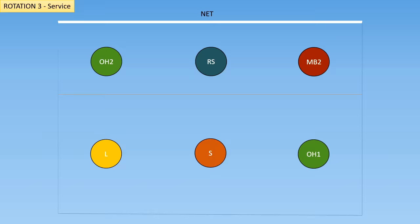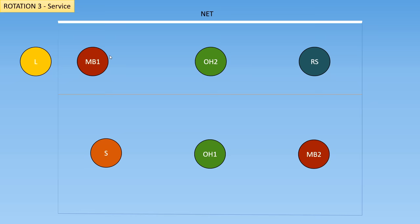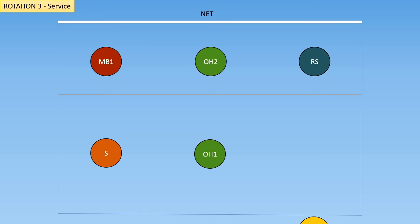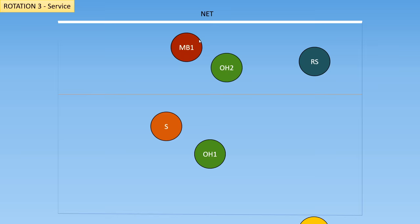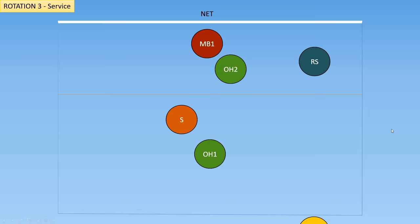Now we've won the point, everybody rotates by one position. The libero is not allowed to play in the front row, so here they are going to sub out for the middle blocker and immediately come back in for the middle in the back. This is so the libero can now serve and be ready for defense. We want all players to get as close to base positions as possible without breaking the rules of rotation. So the middle blocker will get into the middle, and the setter will get to a position that will help them reach the back right as early as possible. Now the libero serves, and all the players will go to their base positions.